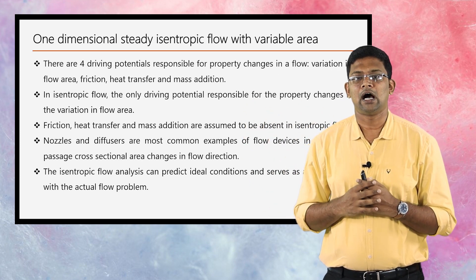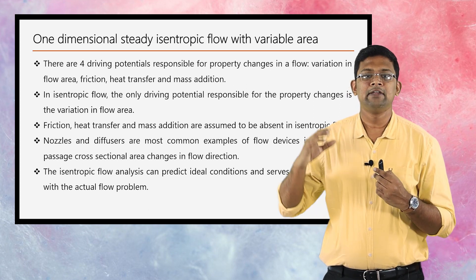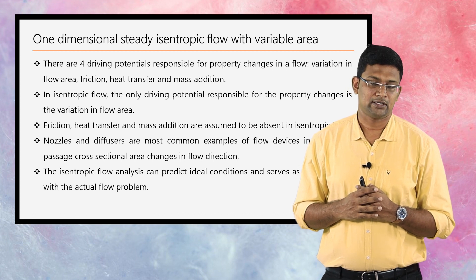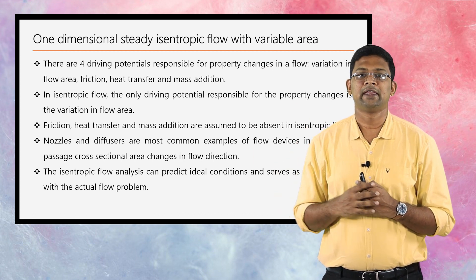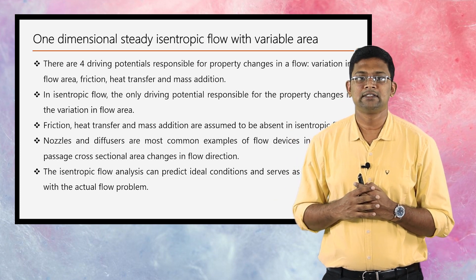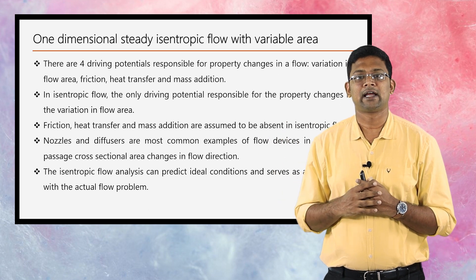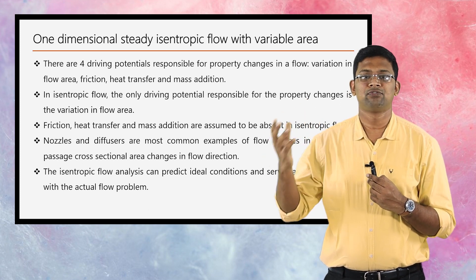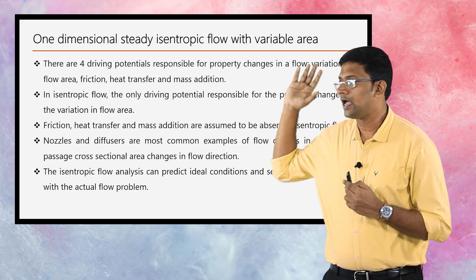Nozzles and diffusers are the most common examples of flow devices in which the passage cross-sectional area changes in the flow direction. In such systems, the heat transfer may be considered negligible and hence it is an adiabatic process. If the frictional effects are considered negligible, then the flow may be considered reversible, and the flow becomes reversible adiabatic — or in other words, isentropic.